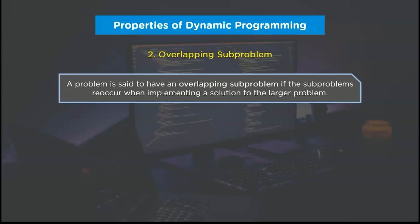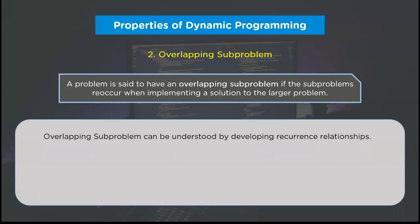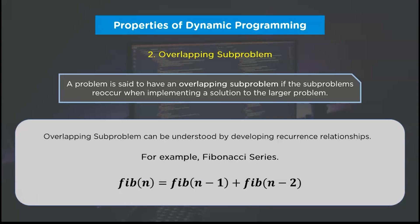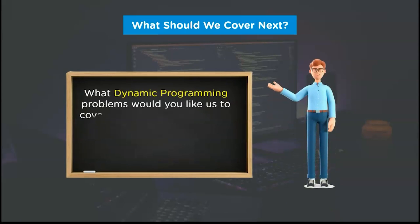The next property is overlapping sub-problems. If the sub-problems recur while implementing a solution to the broader problem, then that problem is said to have overlapping sub-problems. Formulating a recurring relation is the sole technique to determine if a given problem has overlapping sub-problems or not. To understand this better, we'll look at an example of a Fibonacci series program.